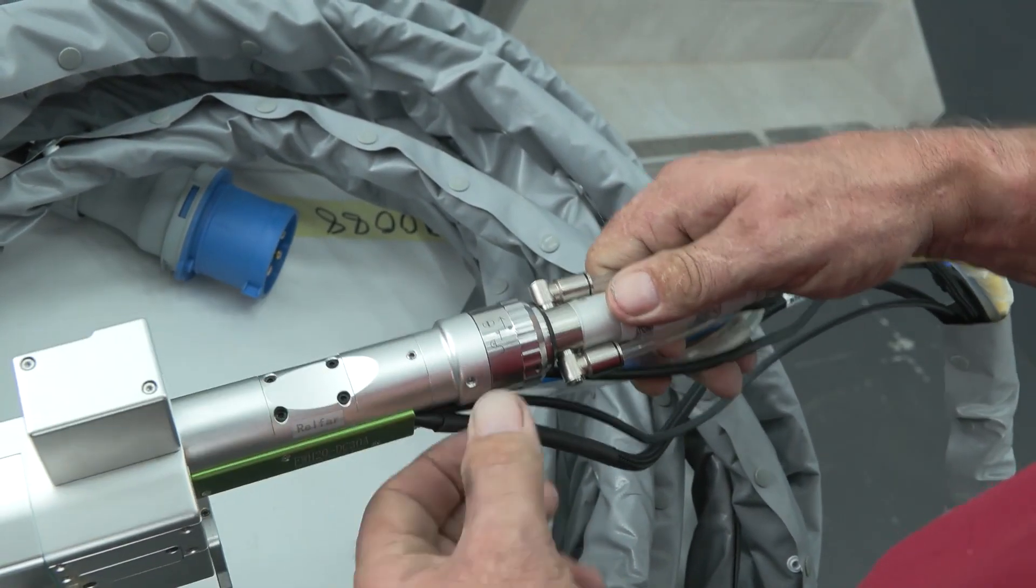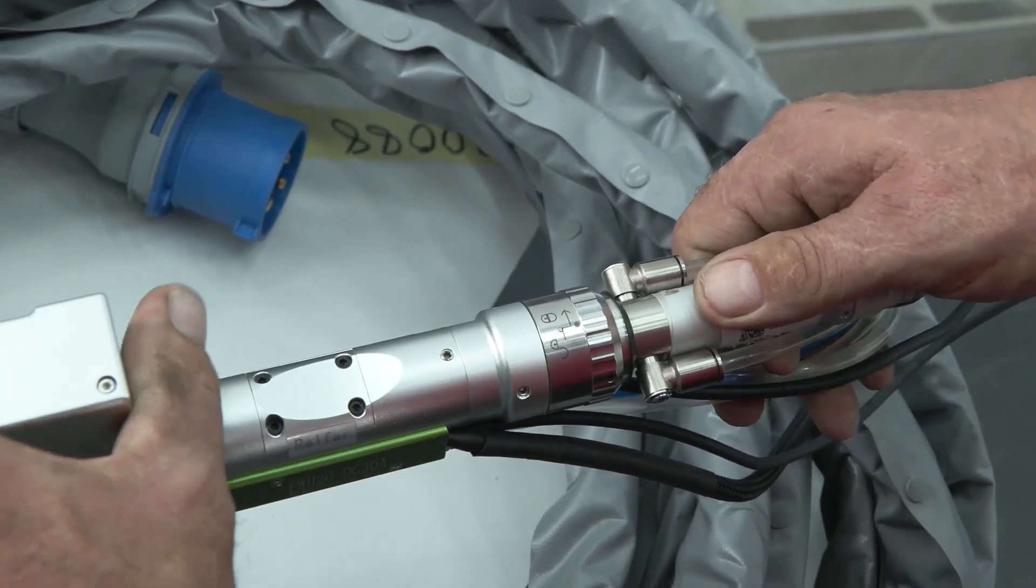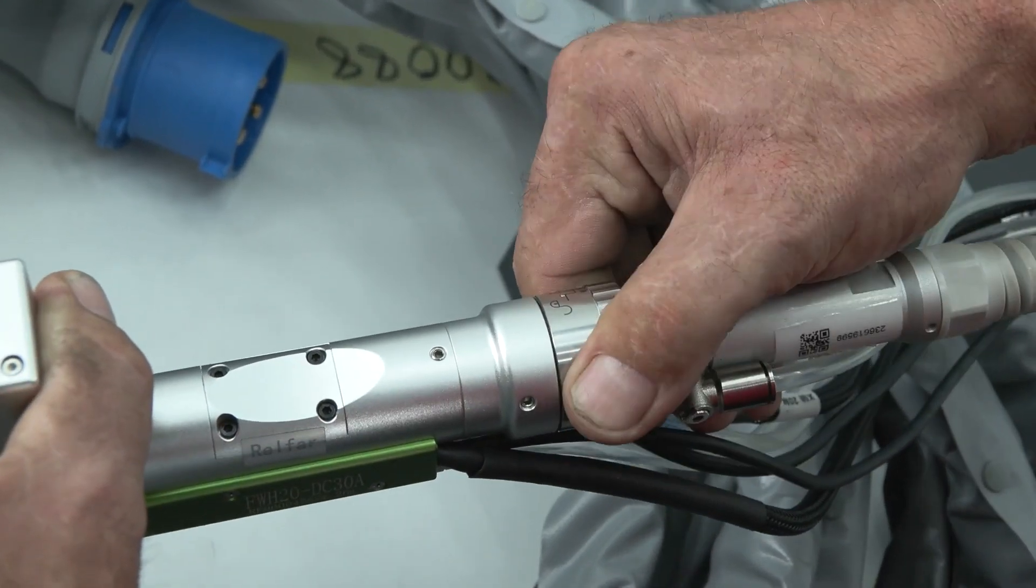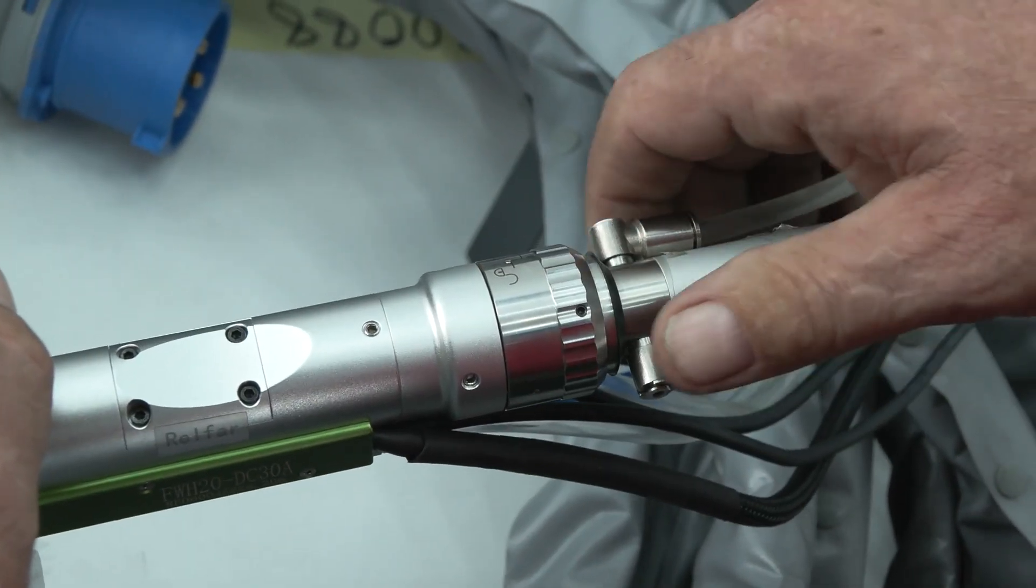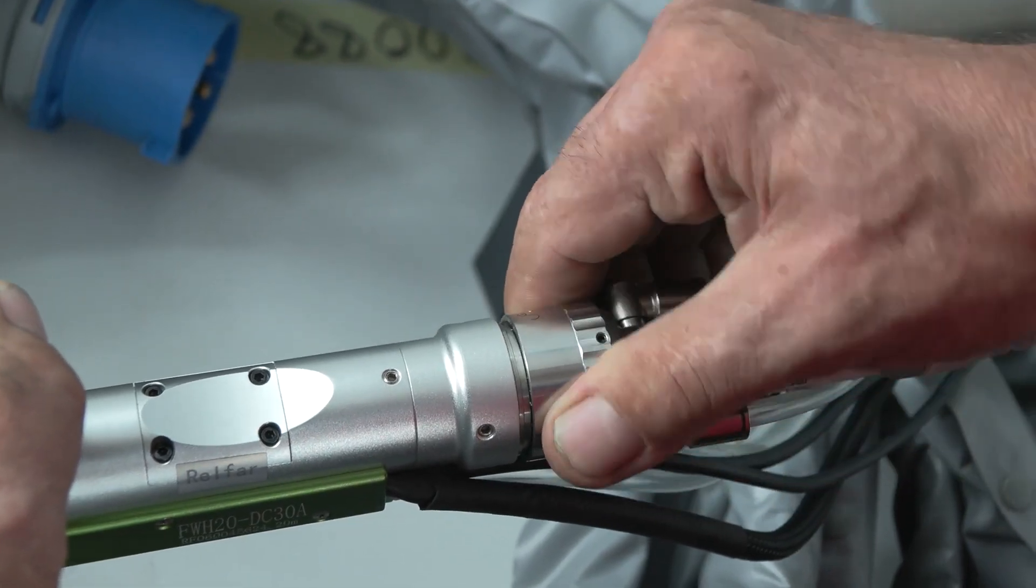Make sure there is no gap between the two sleeves. Then turn the lock nut clockwise. Pull the lock nut back and then turn it clockwise again.